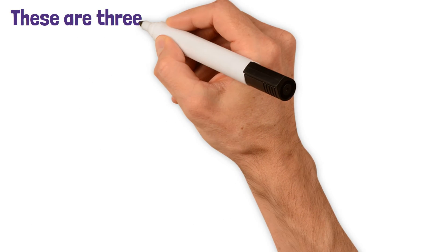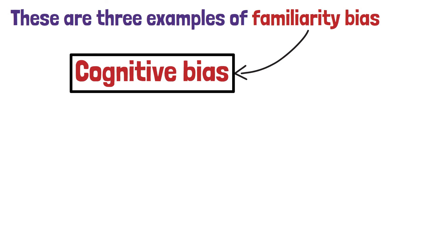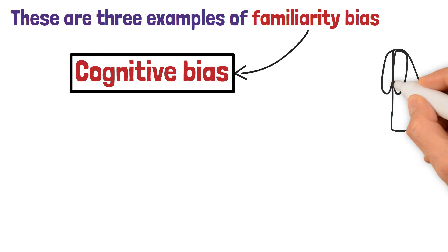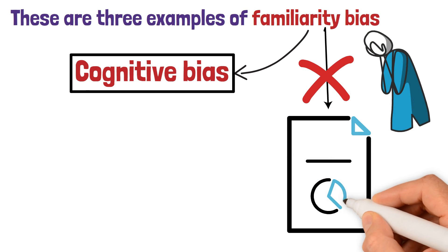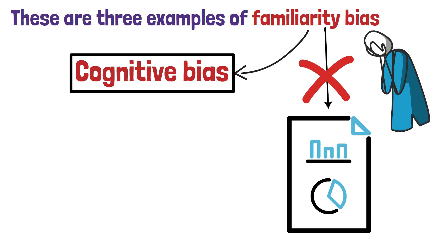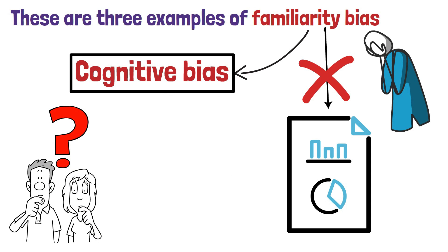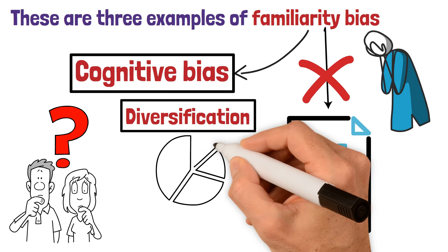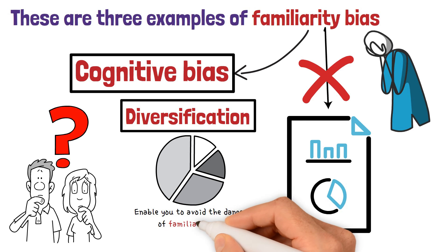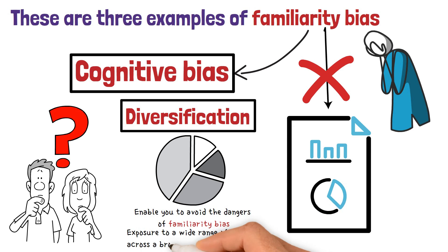So there you have it — three examples of familiarity bias. Familiarity bias is a cognitive bias that comes in many forms and unfortunately tends to affect many investors in a negative way. It's important to ensure that you do not allow familiarity bias to overly influence the construction of your investment portfolio and subsequently your investment returns. The remedy to familiarity bias is that 15-letter D word again: diversification. Constructing a diversified portfolio can enable you to avoid the dangers of familiarity bias, providing you with exposure to a wide range of companies across a broad range of regions.